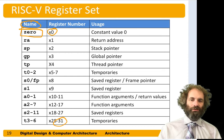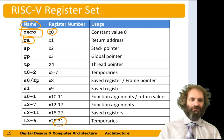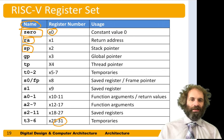In principle, you could store any information in any register, but programmers have agreed on a convention in which they use certain registers for certain purposes, and that makes it easier for two different programmers to write different functions that can talk to each other easily. X1 is known as the return address, and it's used to store the address that you should return to after a function call. X2 is called the stack pointer, and it's an address in memory with the top of the stack, which is used for holding variables as we do function calls — we'll come back to that later on.